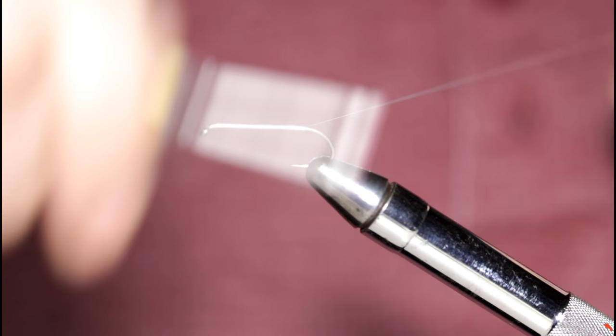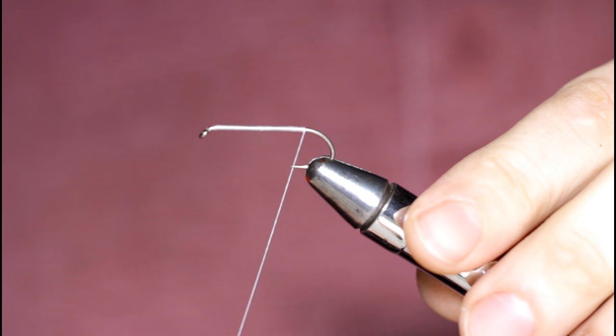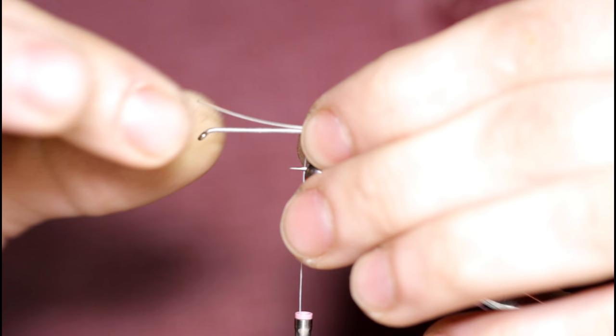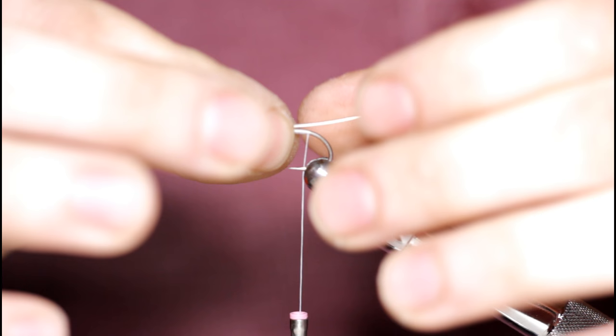Then I'll come in with the body I just made and set this on top of the hook shank. Once I've got this oriented straight, I'm just going to take some wraps over the top here. Making sure the monofilament stays on top and that the rear hook is riding straight.